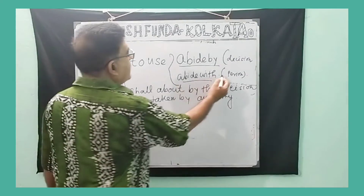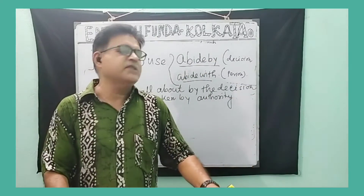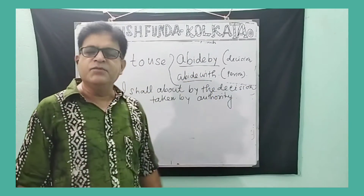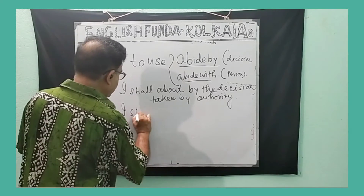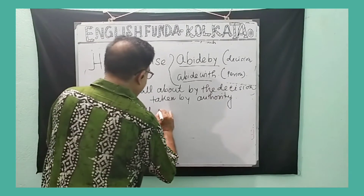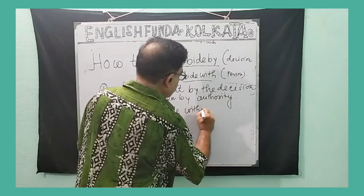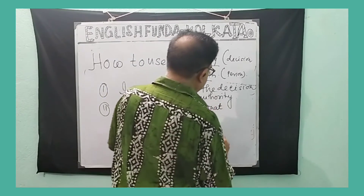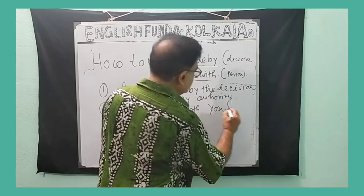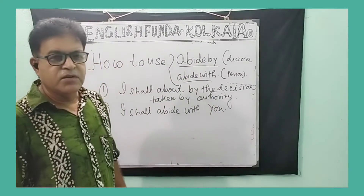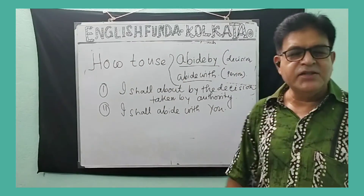But here 'abide with' — when you are obeying some person, you will use 'abide with'. Example: 'I shall abide with you.' So 'abide with' is used when referring to a person.